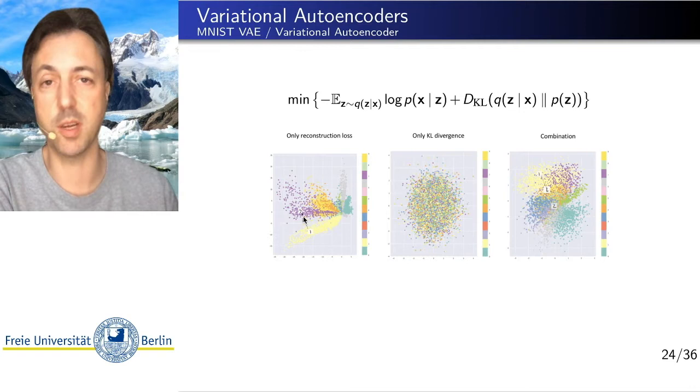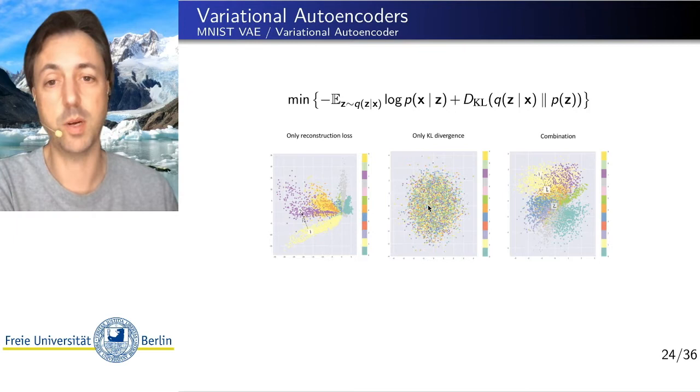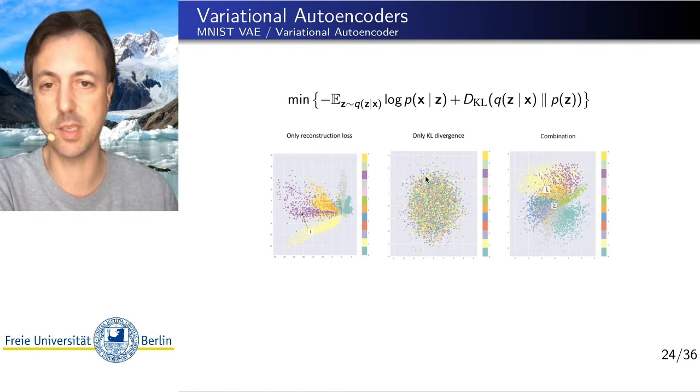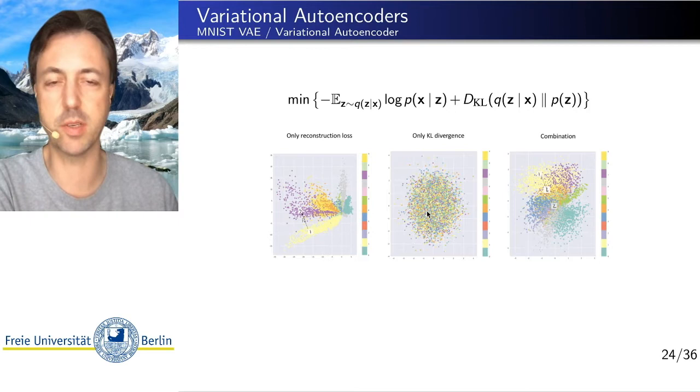On the other hand, if we train only with the KL divergence, we make our latent space distribution Gaussian, because that's what we train it to be. But very close by points in latent space can correspond to very different classes. So we also do not get a meaningful arrangement of latent space if we only train by KL divergence. In fact, there is no guarantee that our decoder will decode to anything that is similar to the input.